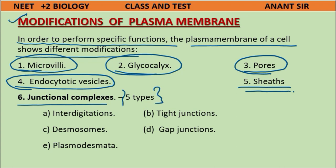Junctional complexes are of five types: A) interdigitations, B) tight junctions, C) desmosomes, D) gap junctions, and E) plasmodesmata.